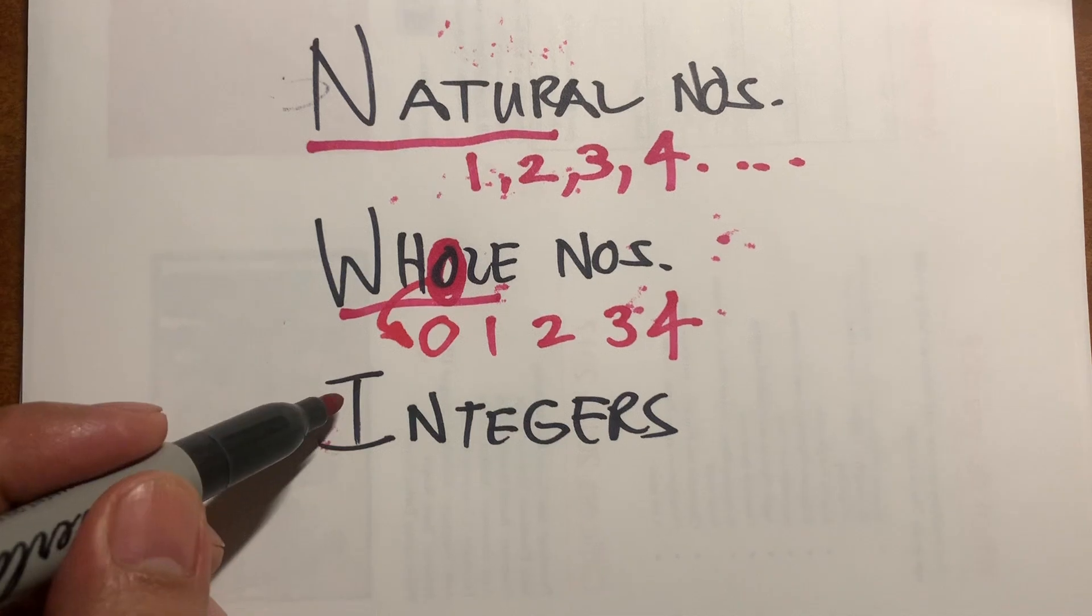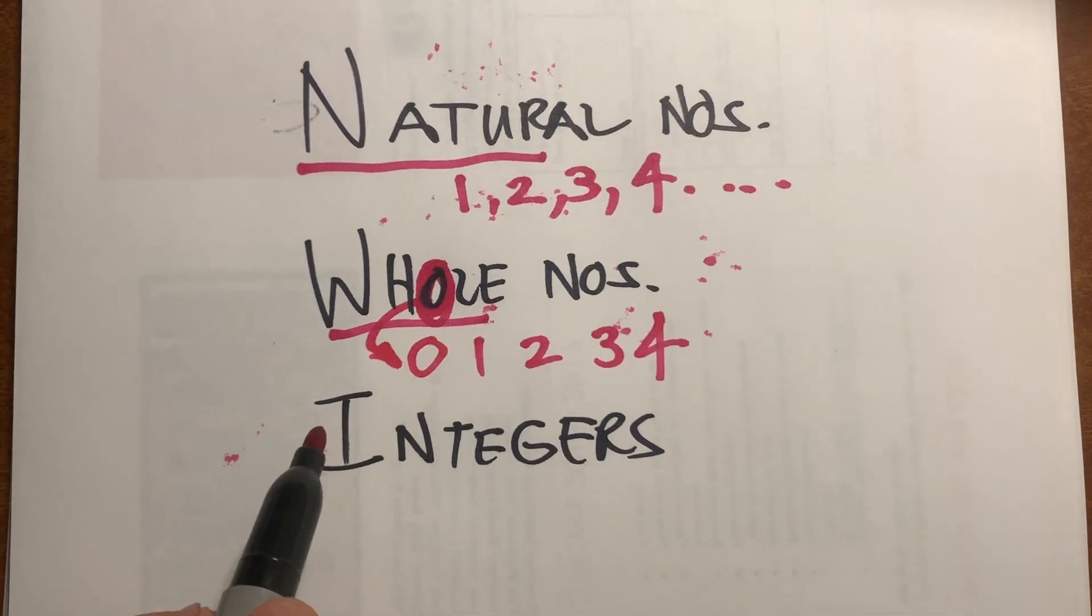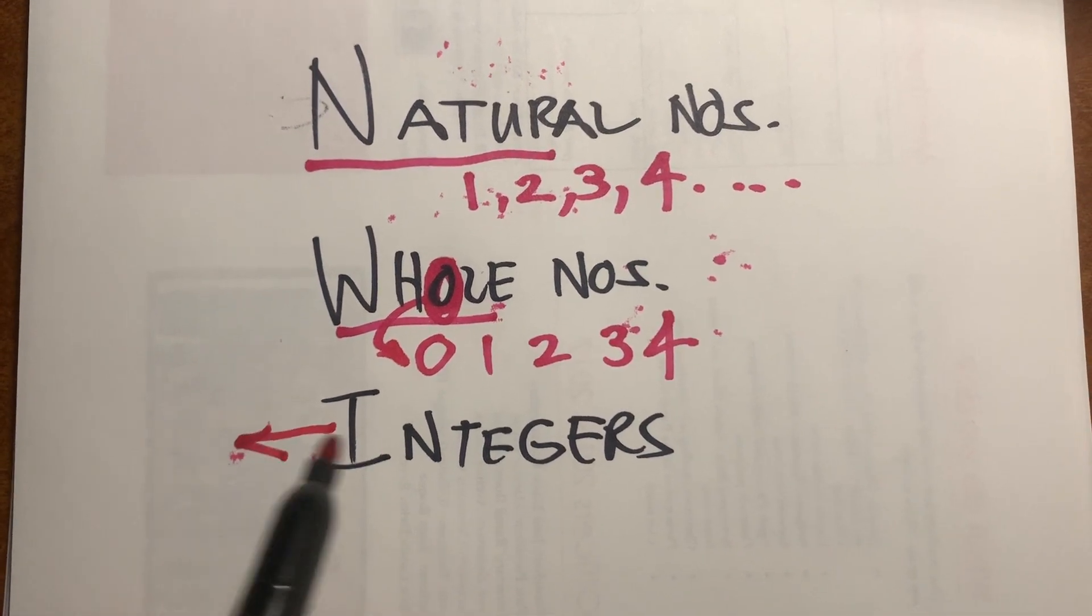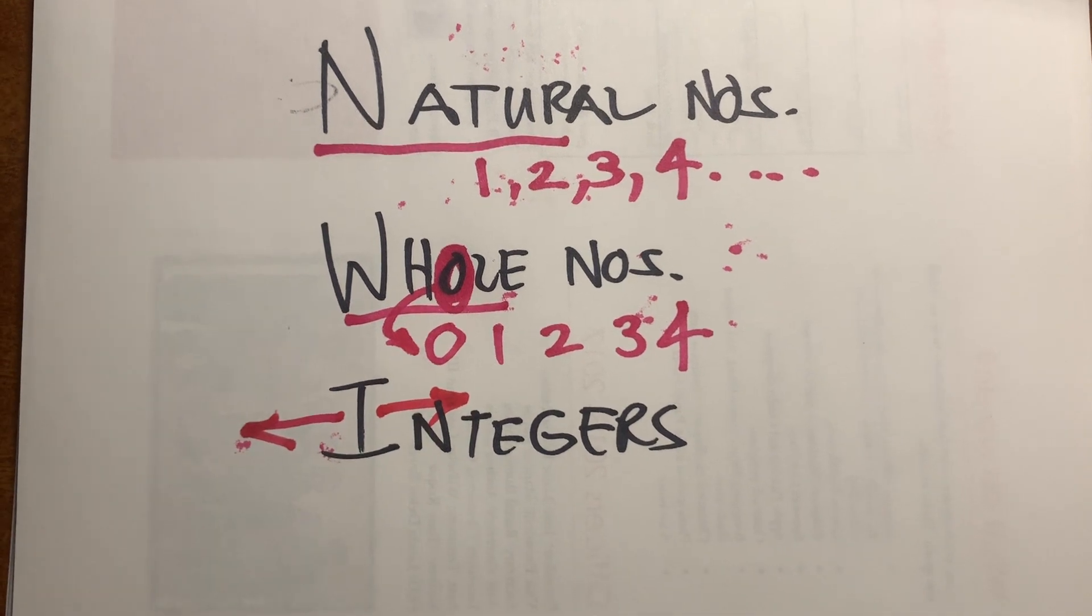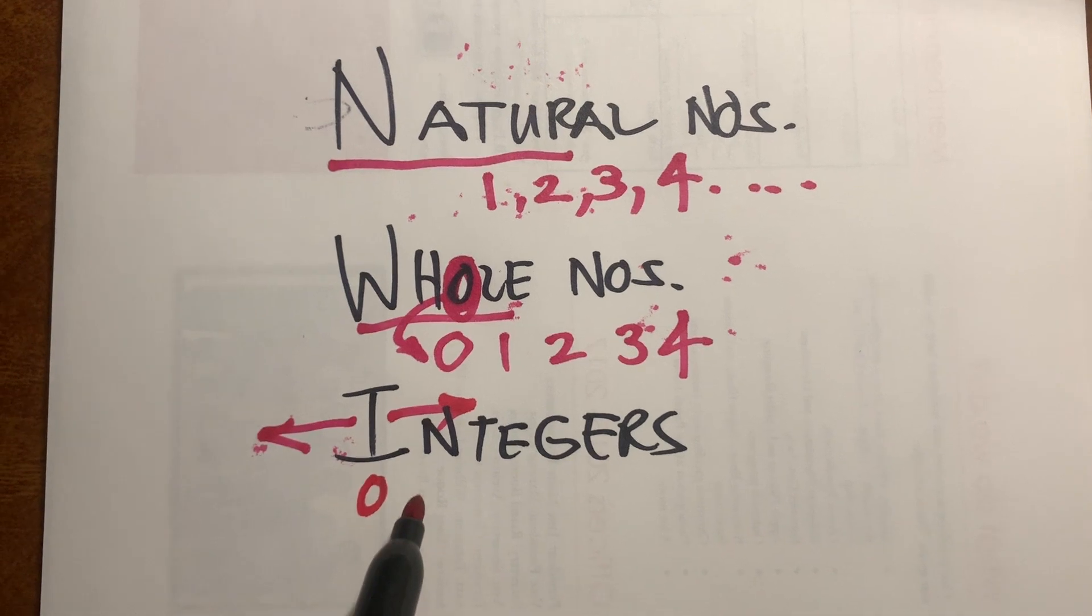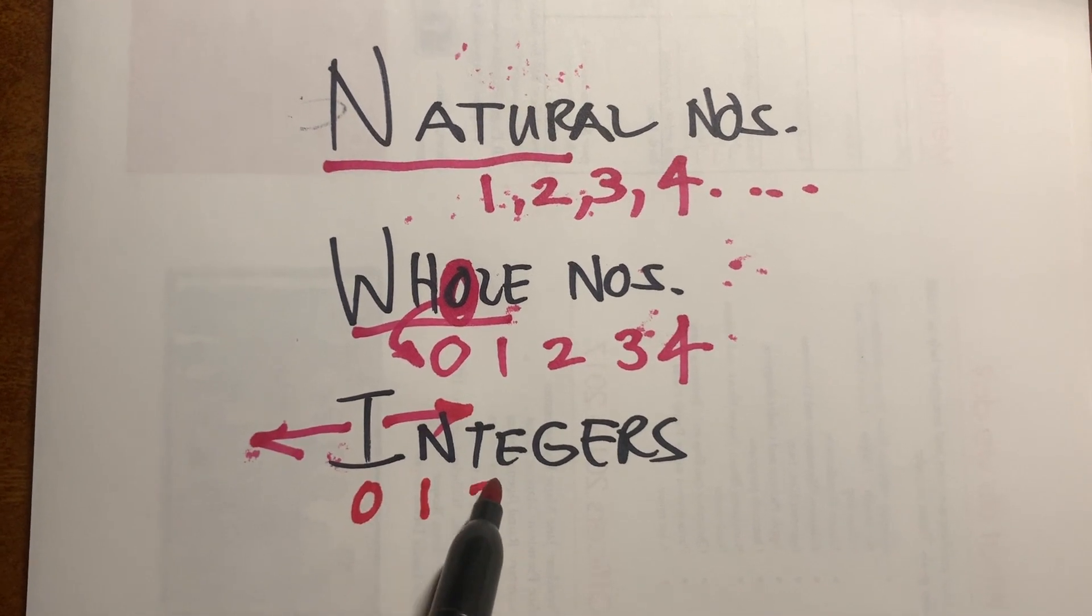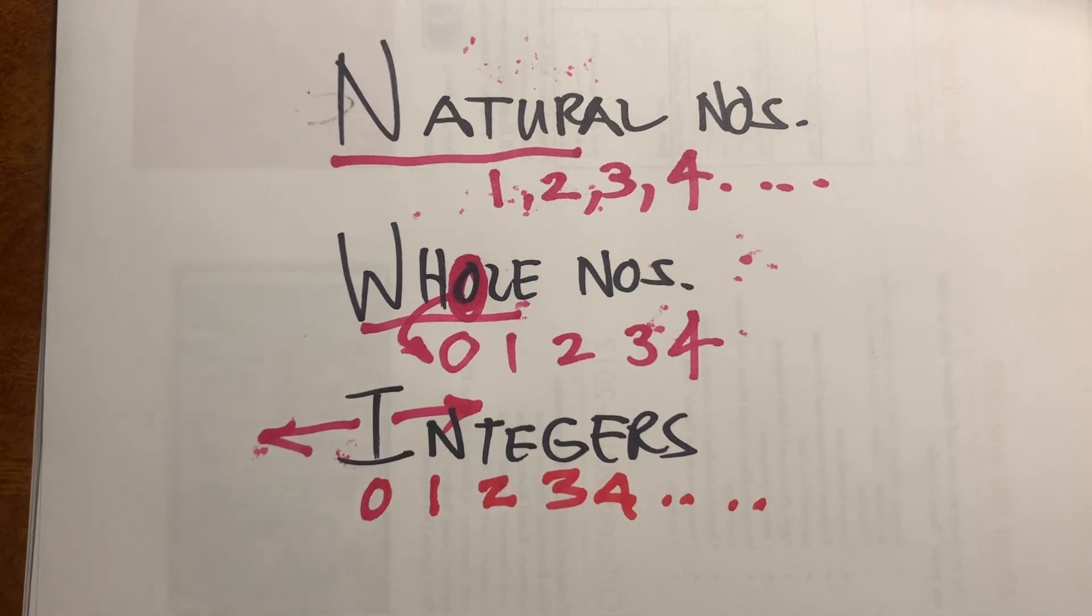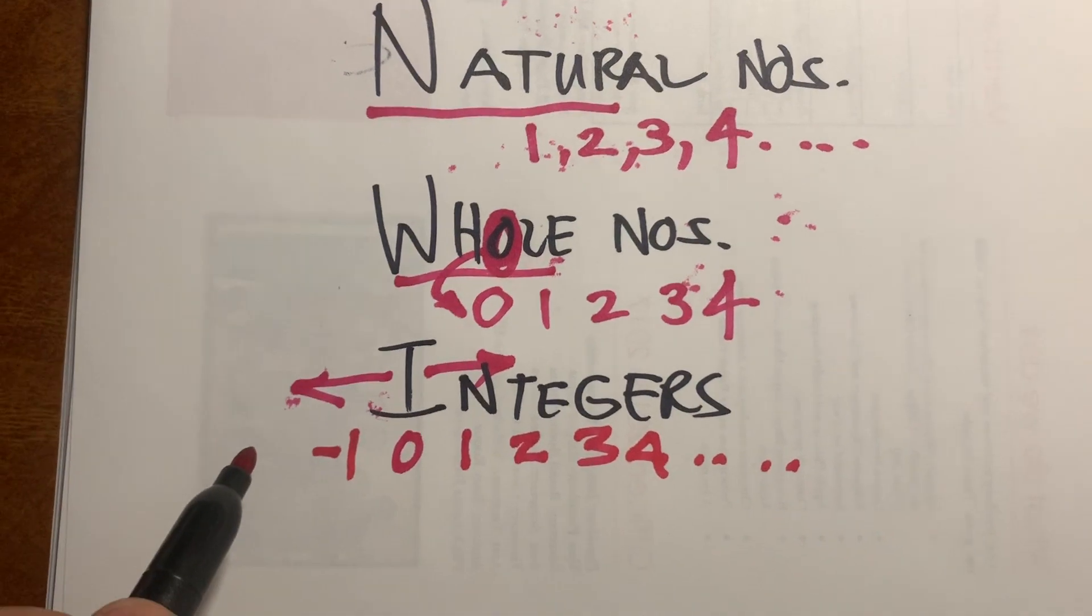For integers, look at this letter I. Think of it as space going to the left, space going to the right. Therefore, it includes the middle is a 0 and this one are the positive whole numbers. To the left are the negative whole numbers.